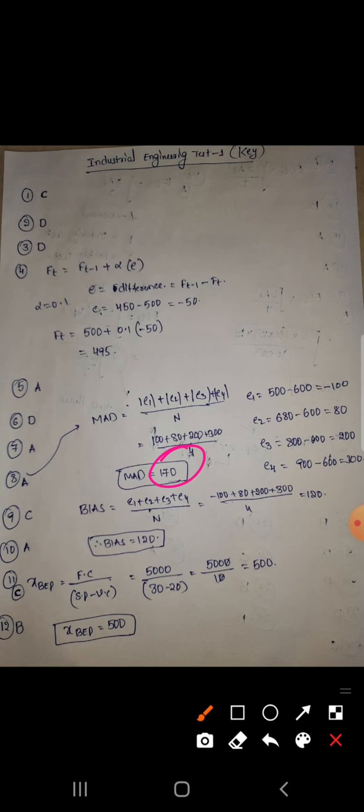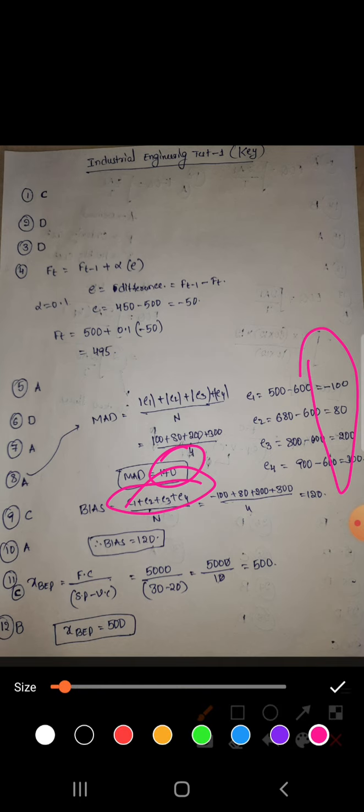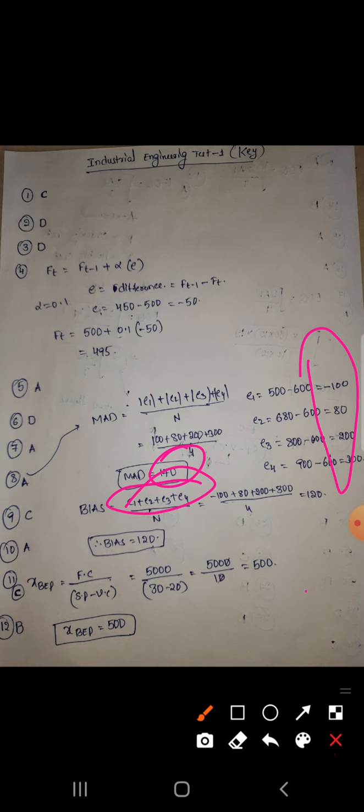Next, bias. Bias is not included in mod, so whatever value we get divided by n, number of forecasts. That is 4, we get the bias is 130. Next, ninth question: how much? That is n periods.